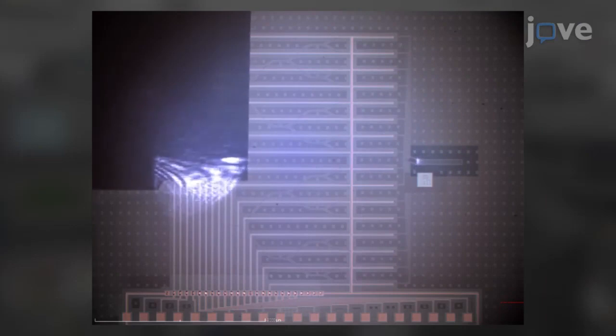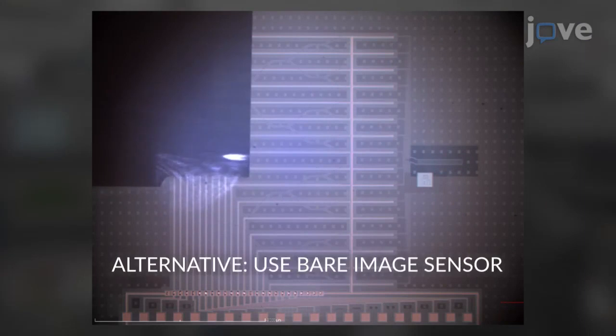To maximize the light intensity at the output gratings, begin sweeping the fiber position over the optical phased array input grating coupler. The light exiting at the optical phased array output gratings should be visible on the image.